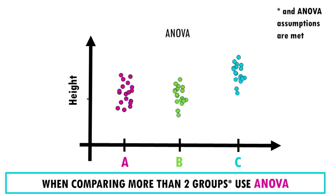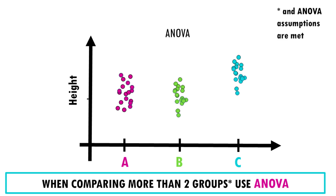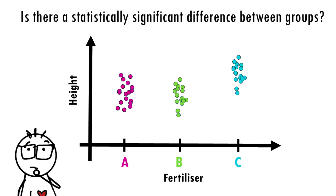When we want to compare more than two groups, we use Analysis of Variance, or ANOVA, which controls for false positives by testing all groups simultaneously. So our question is: do these fertilizers make a statistically significant difference in plant growth, or is this just random chance that one group grew more than the other?